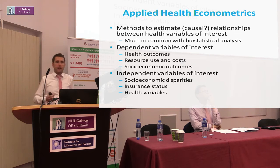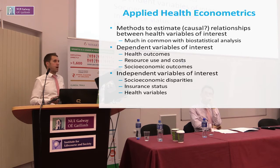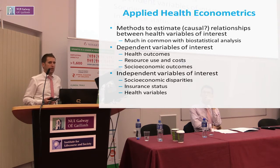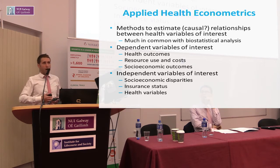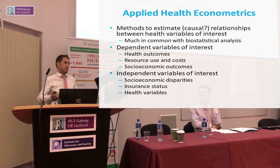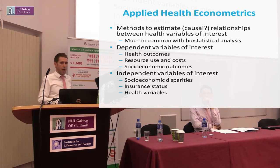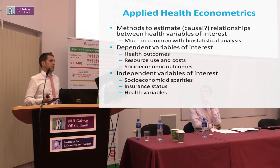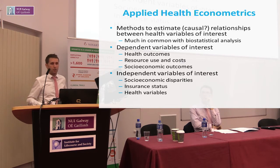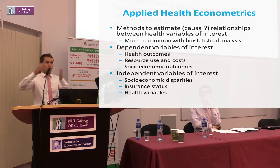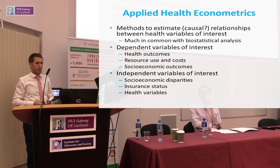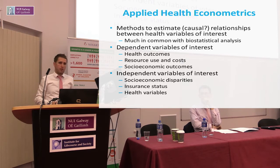Typically in an applied health econometric research project we might be modelling some dependent variable of interest — it could be a health outcome, but it could also be something like resource use, economic costs, or some socioeconomic outcome. On the right-hand side in terms of independent variables, we're often interested in whether there are socioeconomic disparities or gradients in these outcome measures, the extent to which insurance status might impact resource use or health outcomes, and health variables as predictors or explanatory variables.